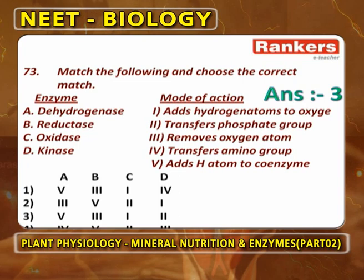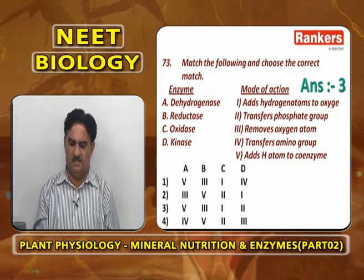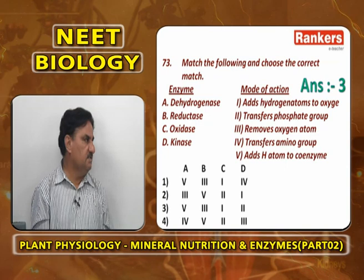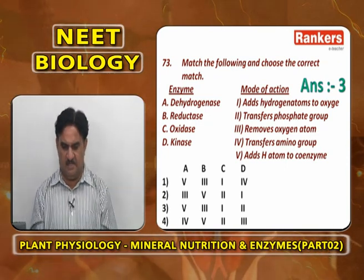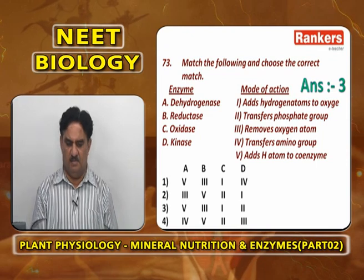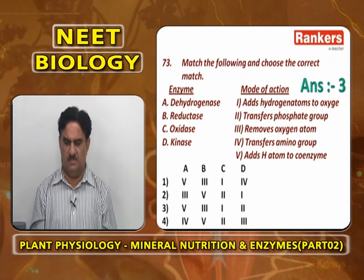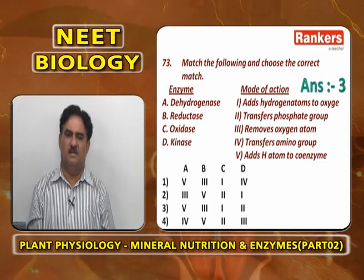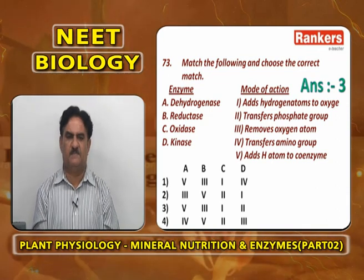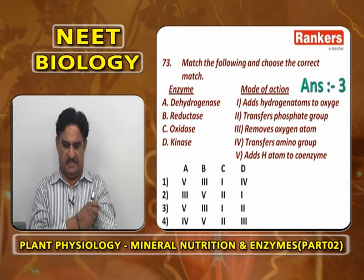Matching enzyme types with their functions: Dehydrogenases add hydrogen to coenzyme (e.g., malic acid converted to oxaloacetic acid). Reductases remove oxygen atoms (e.g., converting nitrates to nitrites). Oxidases add hydrogen atoms to oxygen (e.g., glycolic acid oxidase produces glyoxylic acid and H2O2). Kinases transfer phosphate groups. Answer: A5, B3, C1, D2.